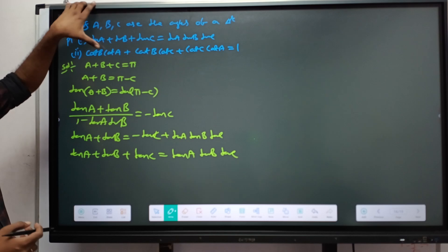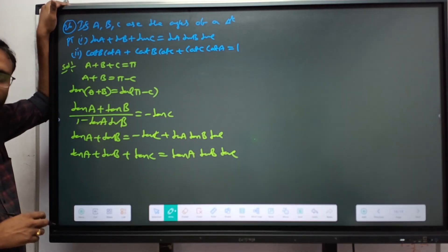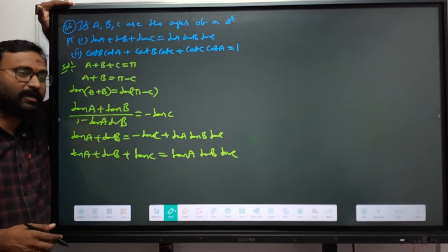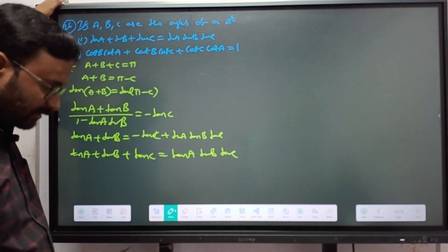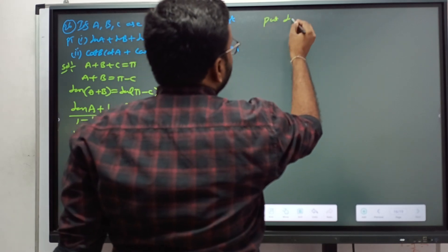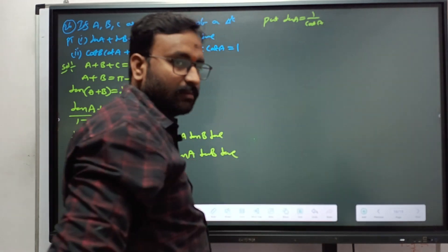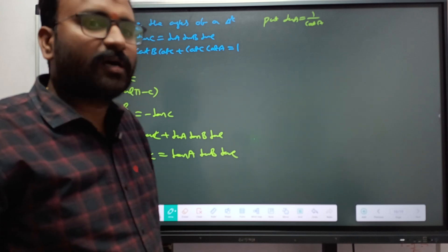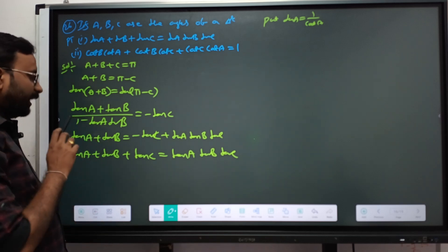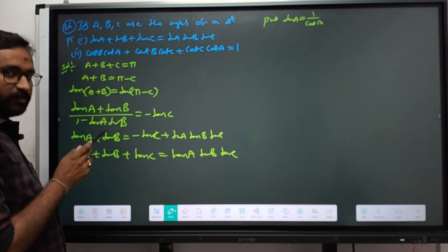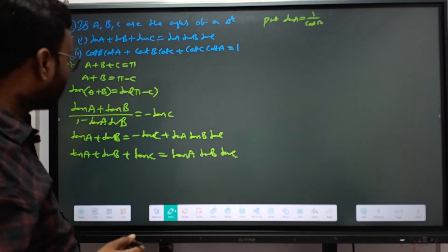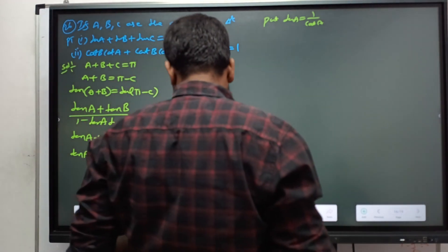Now we need the result in terms of cot. Just write tan as 1/cot, or apply cot to both sides. The cot of (A+B) formula is: (cot A · cot B - 1) / (cot B + cot A). Note the sign rule: if plus in tan then minus in cot numerator, if minus then plus. Now substitute tan A = 1/cot A, tan B = 1/cot B, tan C = 1/cot C.